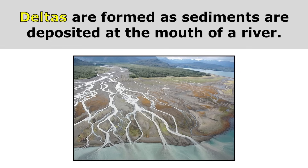Deltas are formed as sediments are deposited at the mouth of a river. As the river slows down, it dumps all of those sediments right as it goes into the ocean. Over time, that builds up until eventually you get this landform of soil that's been carried downstream. It's very rich in nutrients and very easy for plants to grow there — we call it a delta.